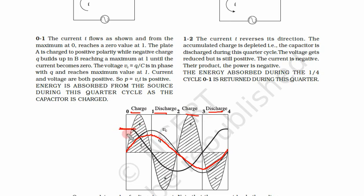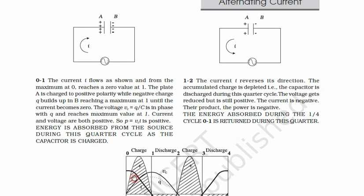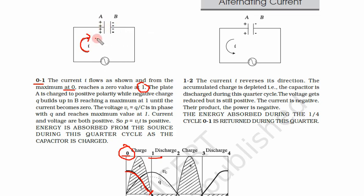In the case of a capacitor, we start with maximum current and zero voltage. At point one, voltage is maximum and current is zero. At point two, current is maximum in the other direction but voltage is zero. At zero, current is positive and voltage is zero; voltage increases while current decreases. From zero to one, current flows clockwise — we see positive charge on one side and negative charge on the other.